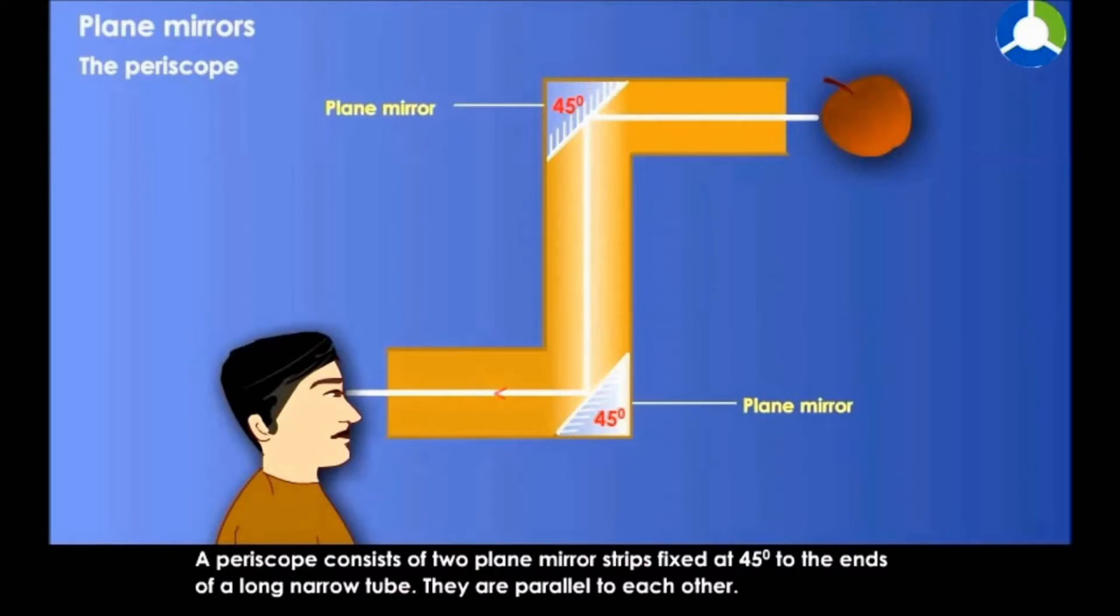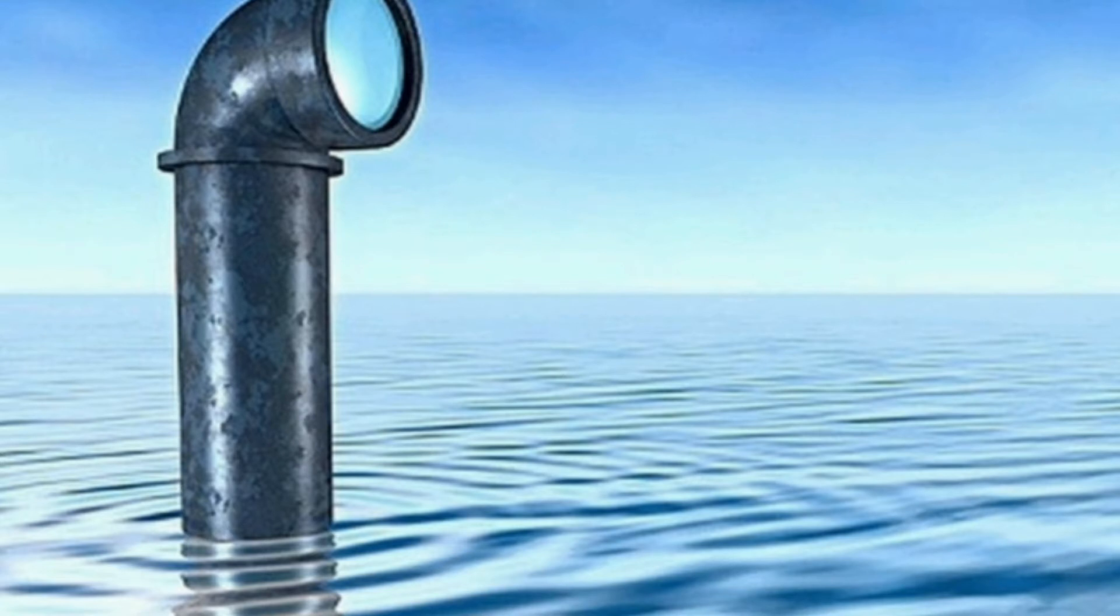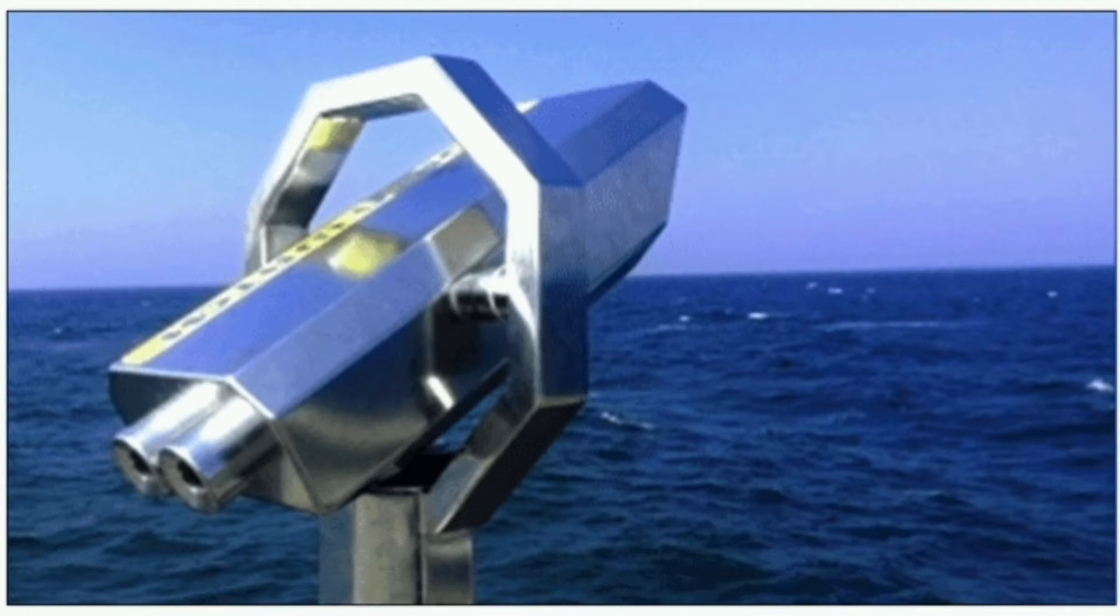Periscopes make use of two plane mirrors kept at 45 degrees. Reflection from the two mirrors enables us to see objects which are not visible directly. Periscopes are used in submarines, tanks, and also by soldiers in bunkers to see things outside.